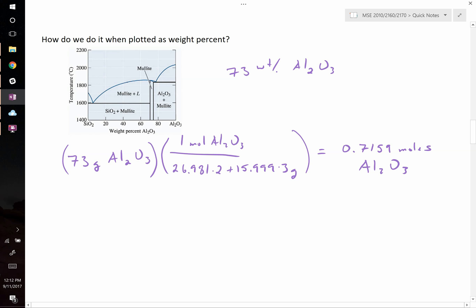Now we do the same thing for silica. We have 27 grams of silica, that's just 100 minus the 73 we had of aluminum. We divide it by its molecular weight. In one mole of SiO2 we have 28.085 plus 15.999 times 2 grams. Punching this into our calculator, we find this equals 0.449 moles.